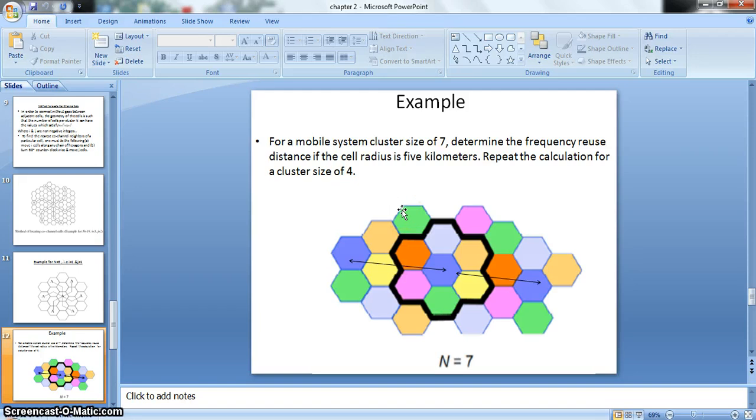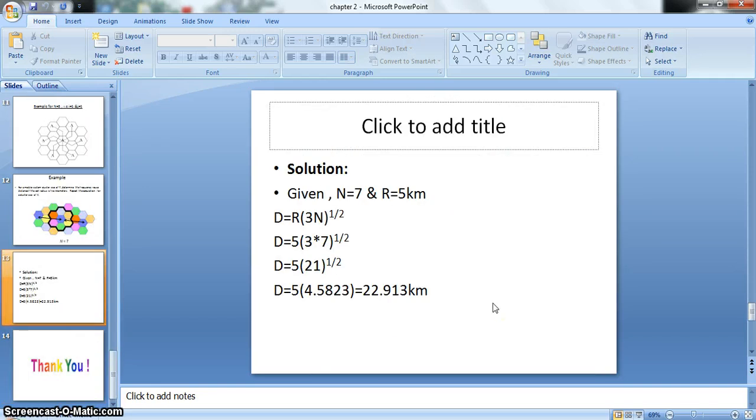So let us see an example to find the reuse distance. For a mobile system with cluster size of 7, determine the frequency reuse distance if the cell radius is 5 kilometers. Here you can see the cluster size is 7. All the cells with different colors are using different frequencies, whereas the same colors are using the same set of frequencies. They are the co-channel cells. So I have to find what is the distance between the co-channel cells. That is, like if I take the blue color, what is this distance? So let us apply the formula. The cluster size is given, that is capital N equals 7, and the radius given is 5 km. Frequency reuse distance formula is D equals R times 3N raised to 1/2.